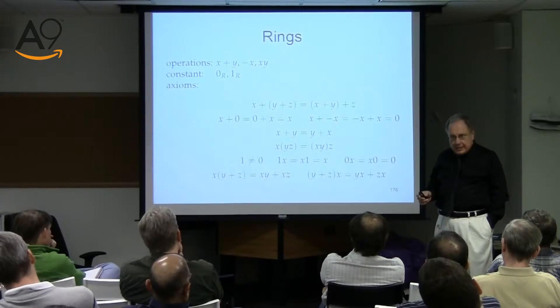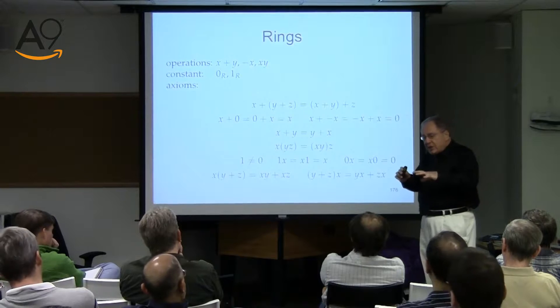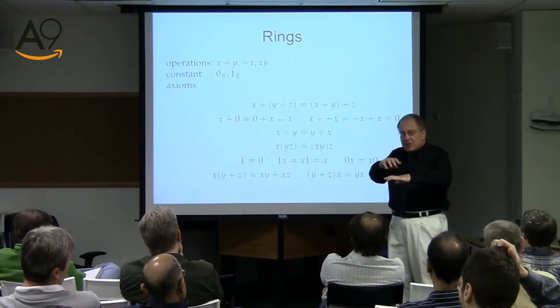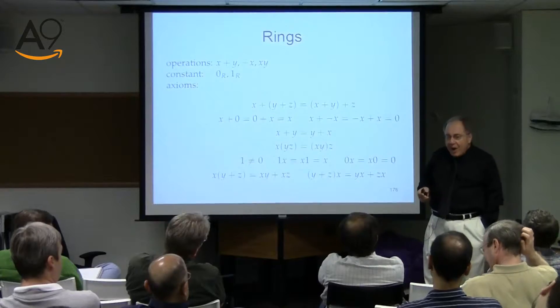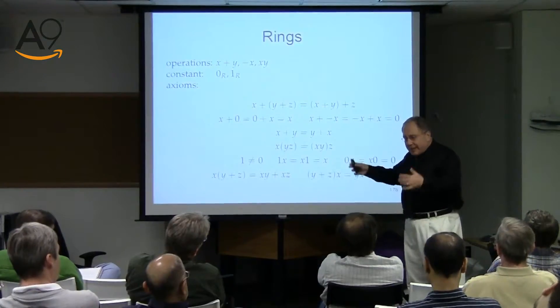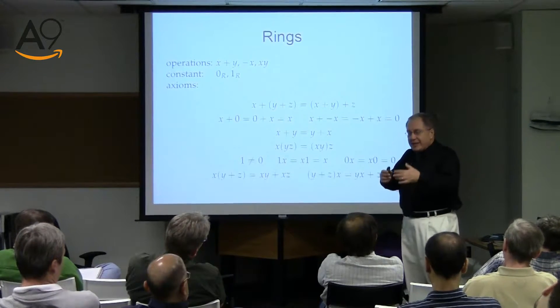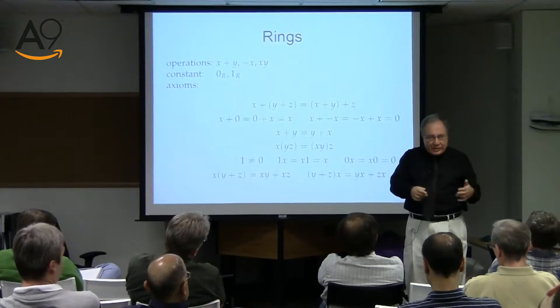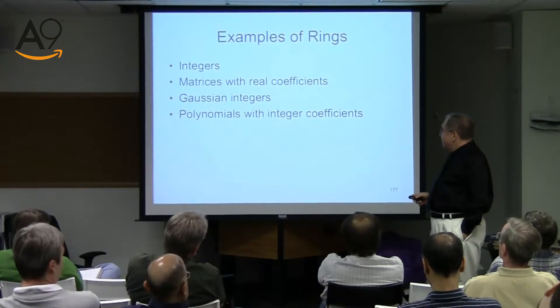The essential axiom at the bottom connects plus and times: it's called distributivity. You cannot just have two operations totally disjoint — they have to be connected. This is a very basic structure. Before Emmy Noether introduced modern rings, people would just replicate these axioms in different domains, proving them separately for matrices and so on.